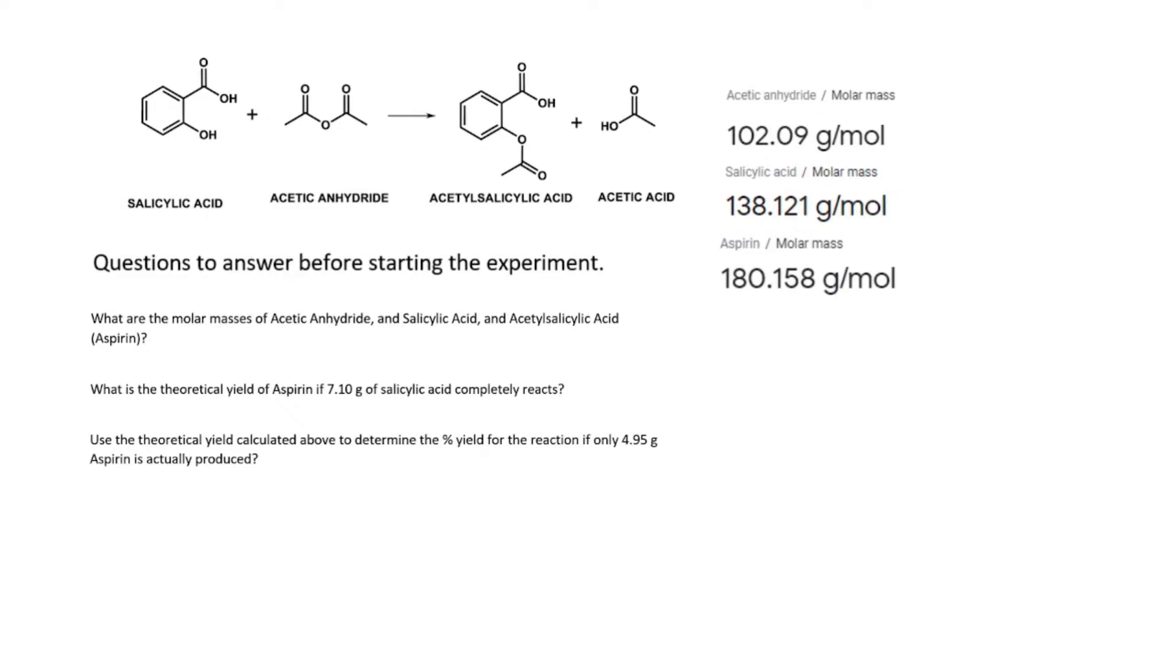For the sake of time, I just went ahead and looked these up. It's really easy - you just type in the name of the compound and Google will give you the molar mass. For acetic anhydride, the molar mass is 102.09 grams per mole.